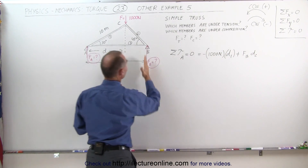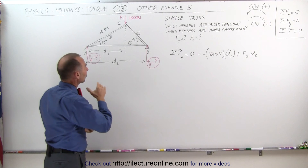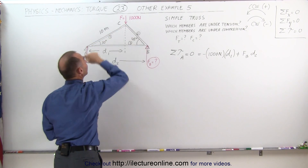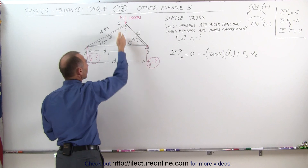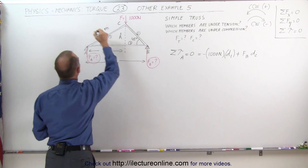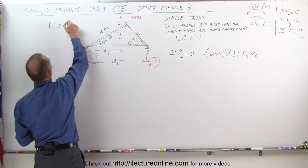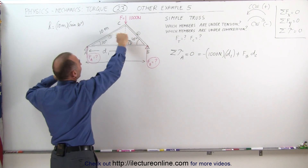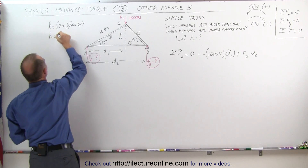We need to find out what those distances are, and all we've been given is the length of member number 1 being 10 meters. However, if this is an angle of 30 degrees, we can find the height and we can find the horizontal distance. Let's find the height first. The height can be found by taking the hypotenuse of 10 meters and multiplying it times the sine of 30 degrees. The height is opposite the angle — that's why we pick sine — and the sine of 30 is one-half, so the height equals 5 meters.